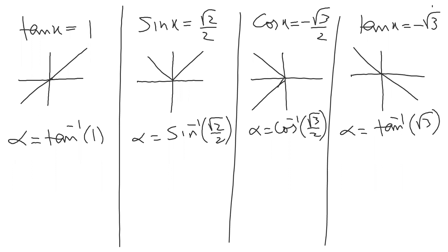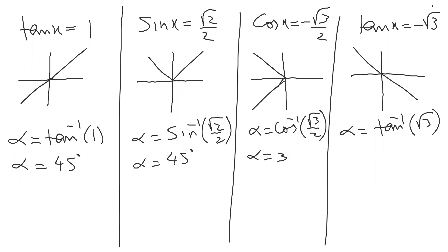When you type in the calculator, tan inverse of one gives 45 degrees. Sine inverse of root two by two gives 45 degrees as well. Cos inverse of root three by two gives 60 degrees — wait, 30 degrees. And tan inverse of root three gives 60 degrees.